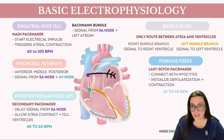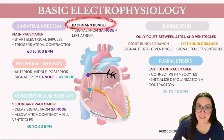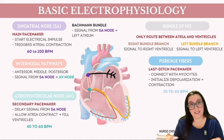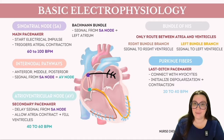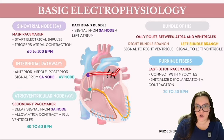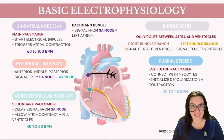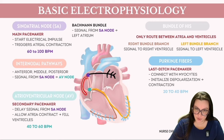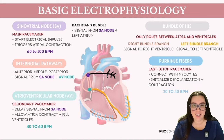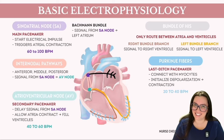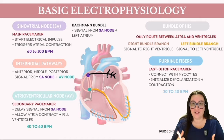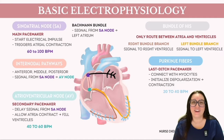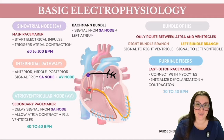Following the SA node, we encounter Bachmann's bundle, characterized by its ability to transmit high-speed signals extending from the SA node across the atrial septum and into the left atrium. Next are the internodal pathways, comprising three distinct routes known as the anterior, middle, and posterior pathways, which are chiefly involved in conveying the electrical impulse from the SA node to the atrioventricular node.